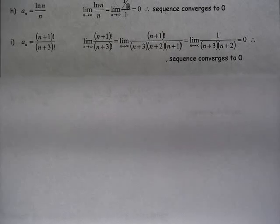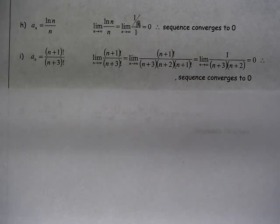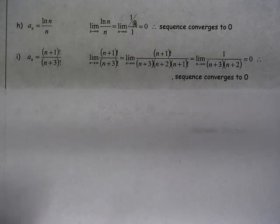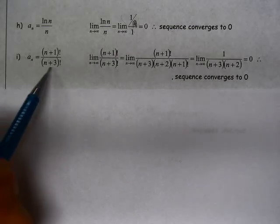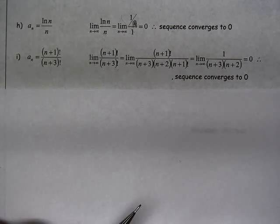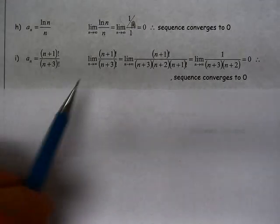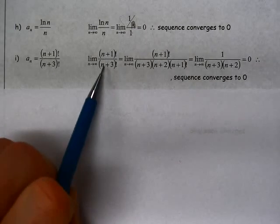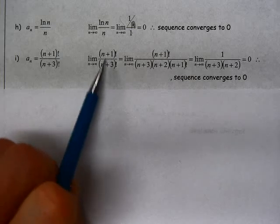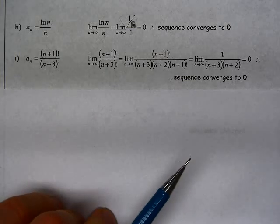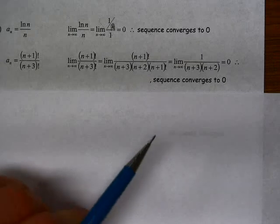All right, so this one might be a little bit new. We have factorial. All right, so I have n plus 1 factorial over n plus 3 factorial. All right, the way I want to think about this is I want to take the limit as n approaches infinity, but if I just use direct substitution, it's not going to tell me anything there. I just have infinity over infinity.